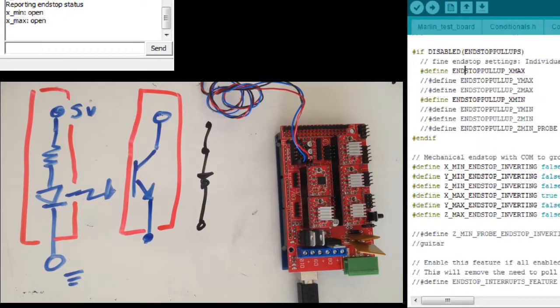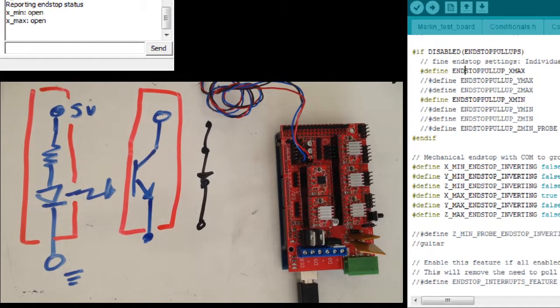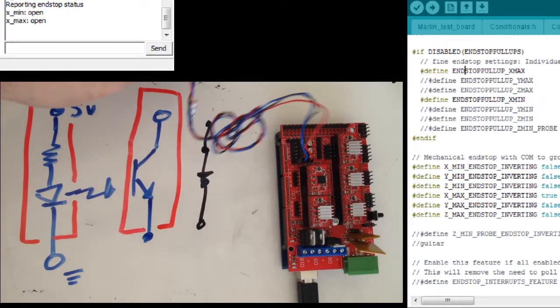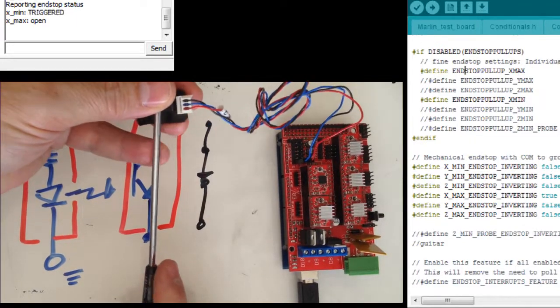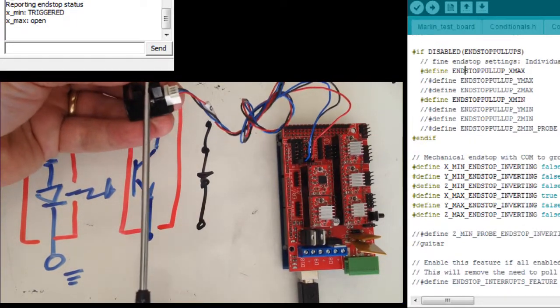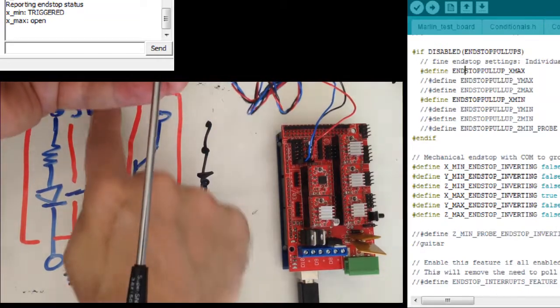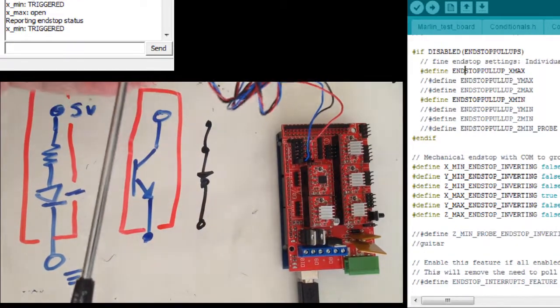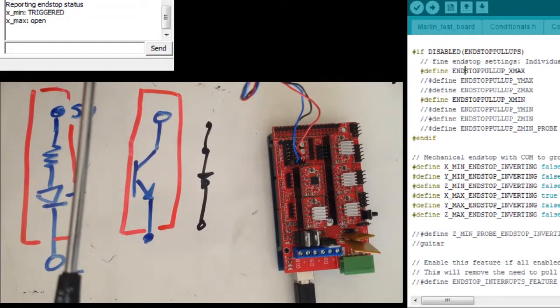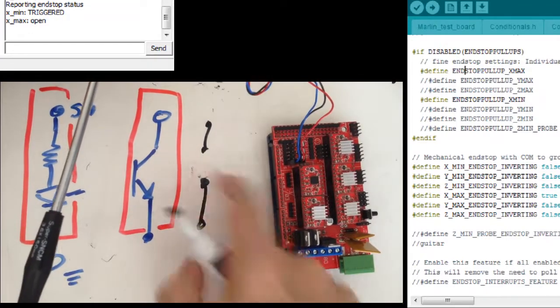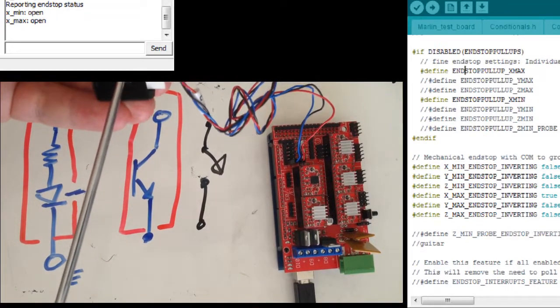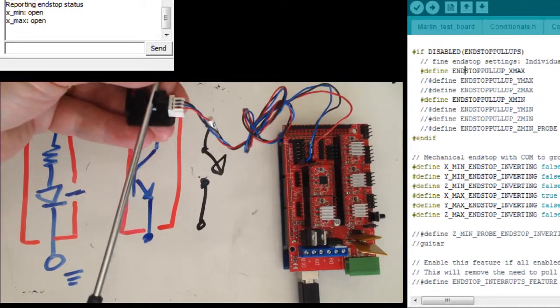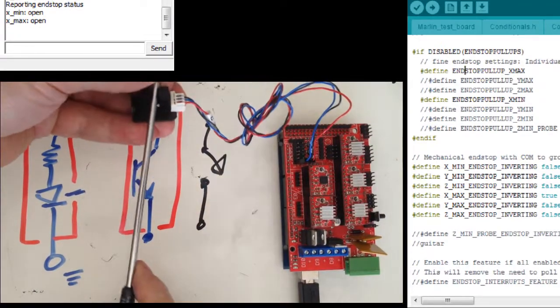So, when I look at my endstop, my X-Min, it says it's open. Okay. When I break that beam, I'm just going to use a screwdriver here and drop it in there. It says that it's triggered. Okay. That's because that screwdriver blocked that beam of light. That switch is now open.